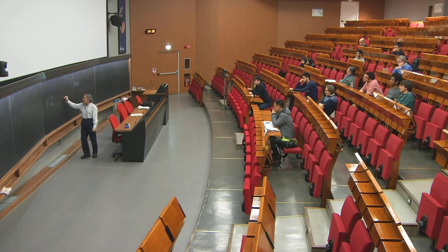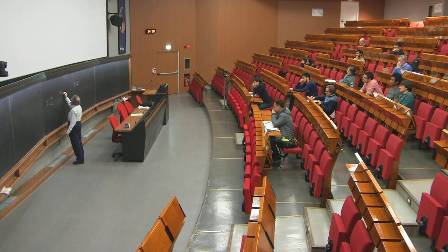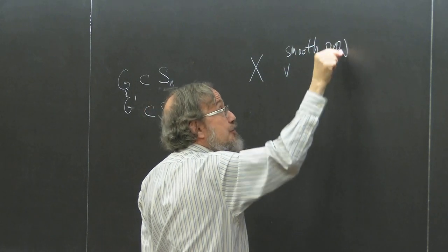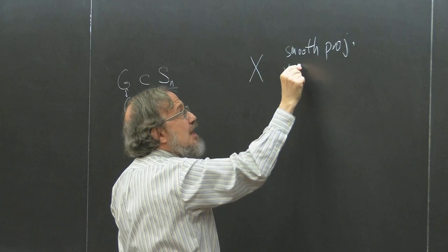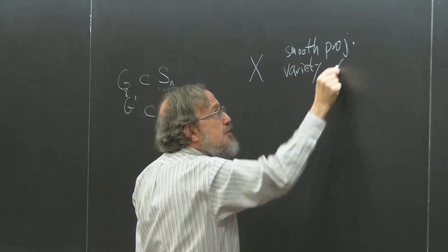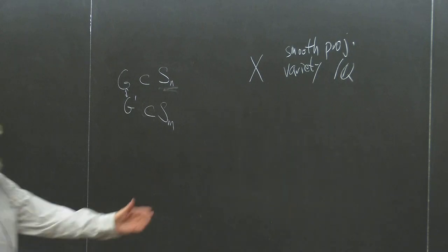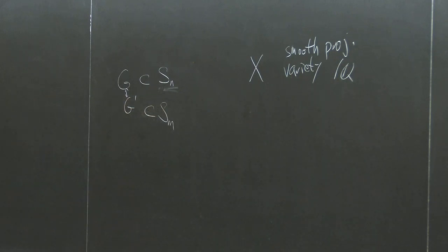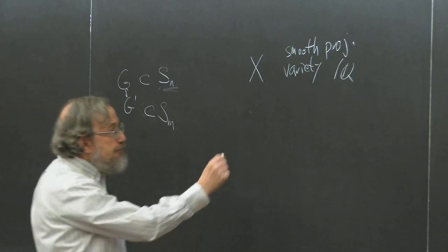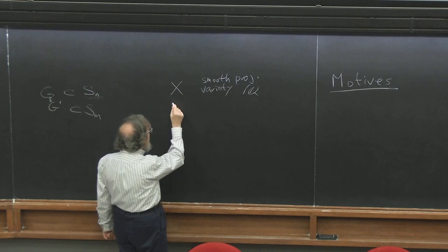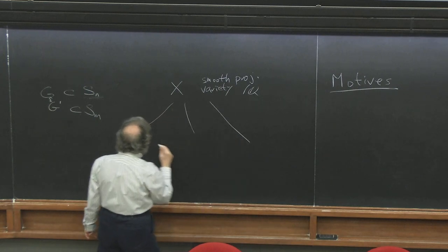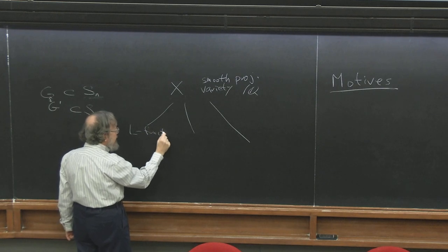So a motive is like that. If you have, as I started to explain last time, a variety—for us let's say a smooth projective variety, so I don't want to get into any technicalities of mixed motives—a smooth projective variety defined over Q. That means it's given by polynomial equations in many variables. They're homogeneous because I'm in projective space, and they have rational coefficients or integer coefficients if I multiply by the denominator. There are several things you can do. One thing I talked about last time is there's an L-function called the Hasse-Weil zeta function.